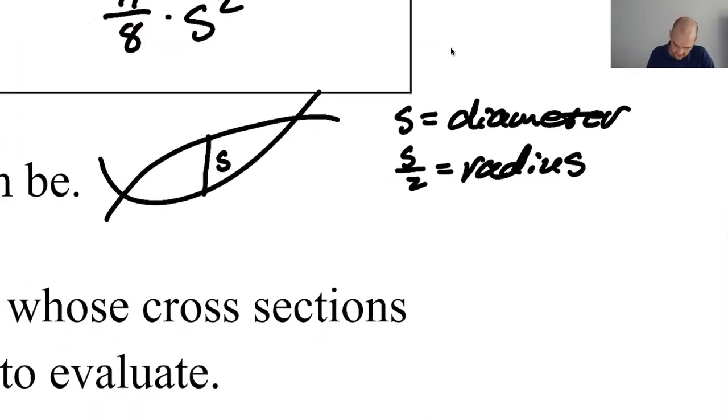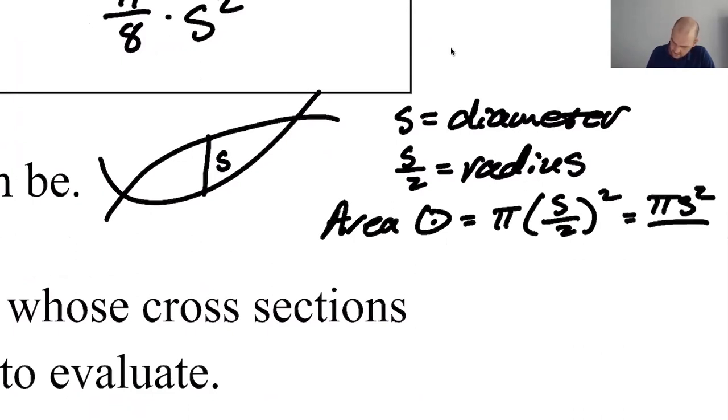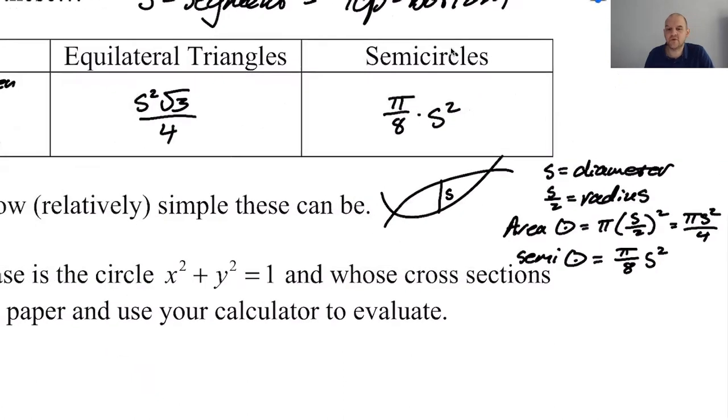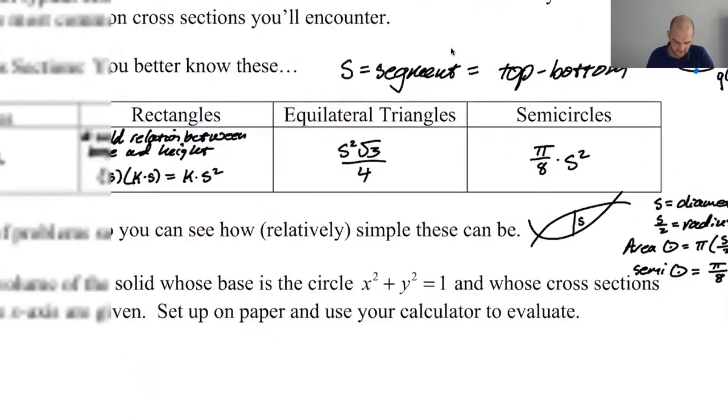Area of a full circle is going to be pi R squared. So S over two squared, which is pi S squared over four. But then we want semicircle. So that's half of a circle. So it's pi over eight S squared. But you know what you're going to do? You're going to memorize that. You're not thinking about this. You're just doing. So these are the big four.